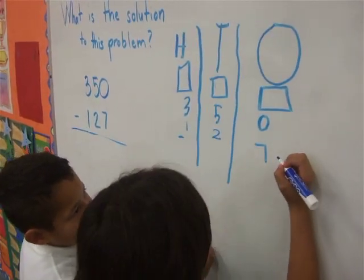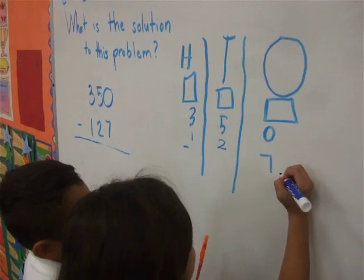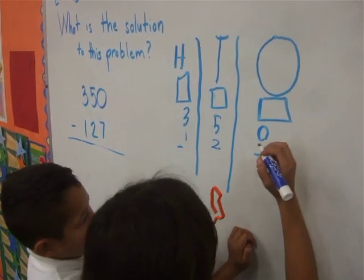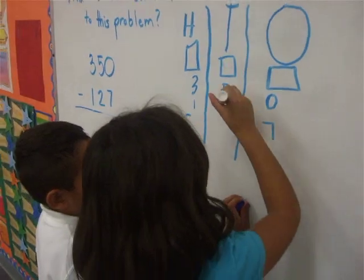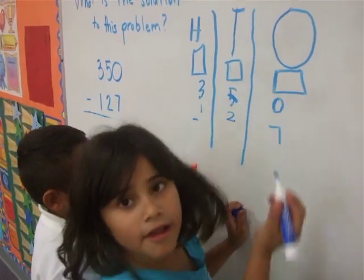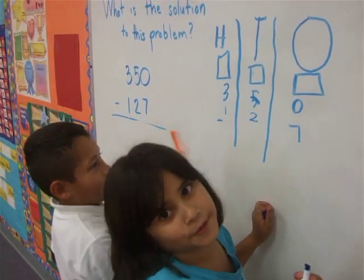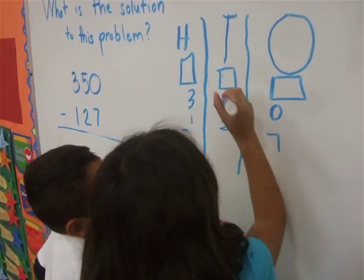What is zero minus seven? You can't take it, so you have to borrow from my neighbor. What's another word for borrow? Regroup. Regroup from my neighbor.